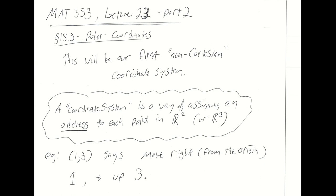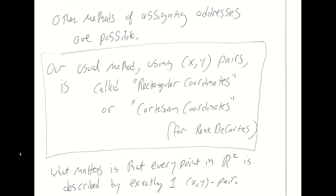The way that we usually think about the plane is these ordered pairs, these XY pairs. If I give you point (1,3), you know that means you start at the origin, move right a distance of one, then move up a distance of three, and you can draw the point in the plane referred to by this ordered pair. It is possible to come up with other methods for assigning addresses other than this schema of how far do I move right or left, and then how far do I move up or down.